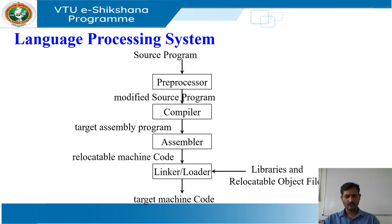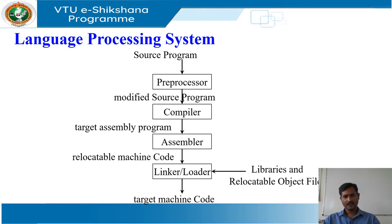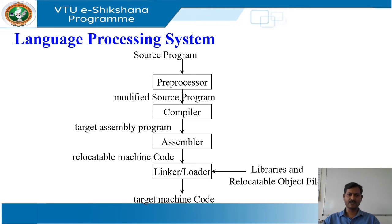Now we will see the language processing system. An entire language processing system is as shown. In addition to a compiler, several other programs may be required to create an executable target program. A source program may be divided into modules and stored in separate files. The task of collecting the source program is sometimes given to a separate program called a preprocessor.